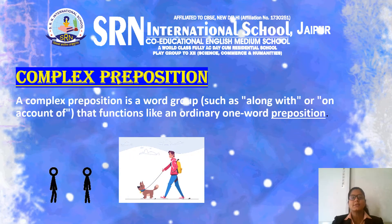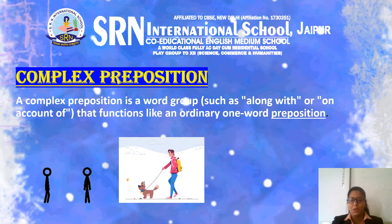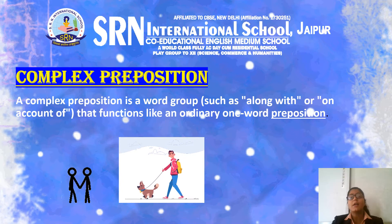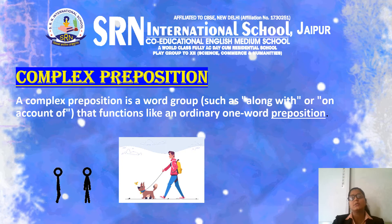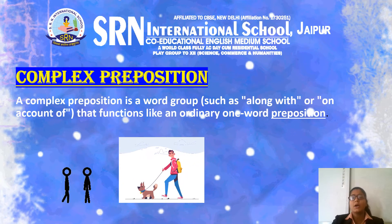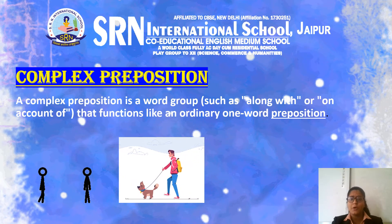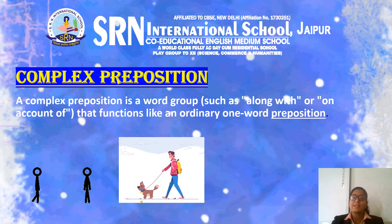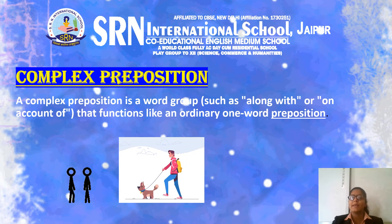Second is complex preposition. A complex preposition is a word group, such as 'along with' or 'on account of,' that functions like an ordinary one-word preposition. Complex prepositions consist of two or three words acting as a single unit. Examples include: according to, along with, apart from, because of, contrary to, due to, except for, instead of, prior to, and regardless of.